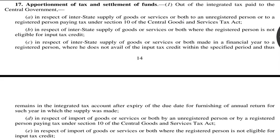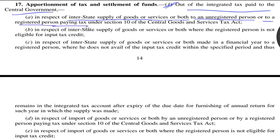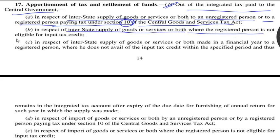Subsection 1: Out of integrated tax paid to the central government in respect of interstate supply of goods, services or both to an unregistered person, or to a registered person paying tax under Section 10 of CGST Act. Also, out of integrated tax paid to the central government in respect of interstate supply of goods, services or both, where the registered person is not eligible for input tax credit.